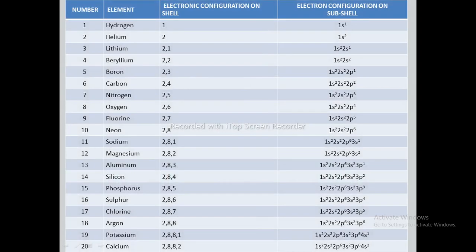Here is a table showing the electronic configuration on the basis of shell and sub-shell for the first 20 elements. Hydrogen is 1s¹, helium is 1s², lithium is 1s² 2s¹, beryllium is 1s² 2s², boron is 1s² 2s² 2p¹, and so on up to calcium. The electronic configuration on the basis of shell and sub-shell for all first 20 elements is displayed in the table.